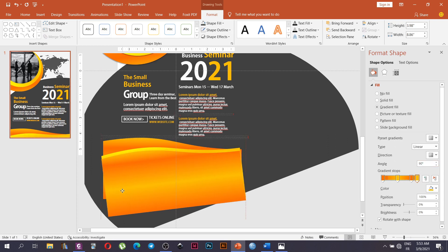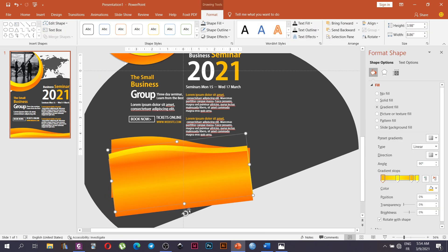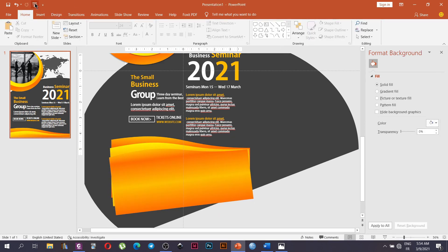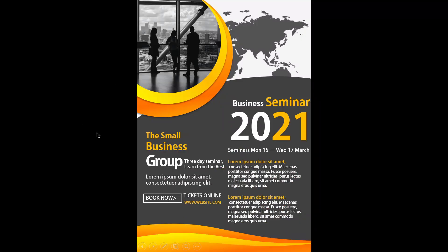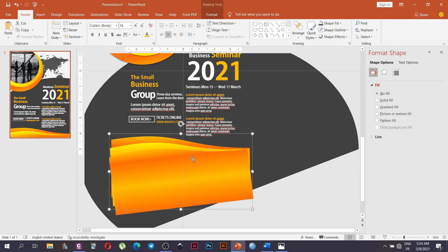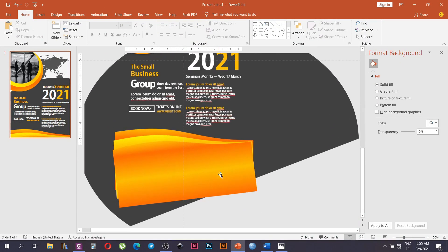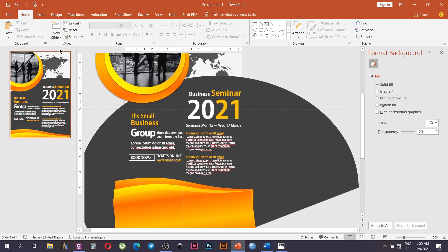We can see our design already. The shape wasn't present at first but now it is, so we align it. We can preview the design by doing a slide show — it's already looking pretty good. We are going to align the content appropriately, do the finishing touches, and add the social media icons.